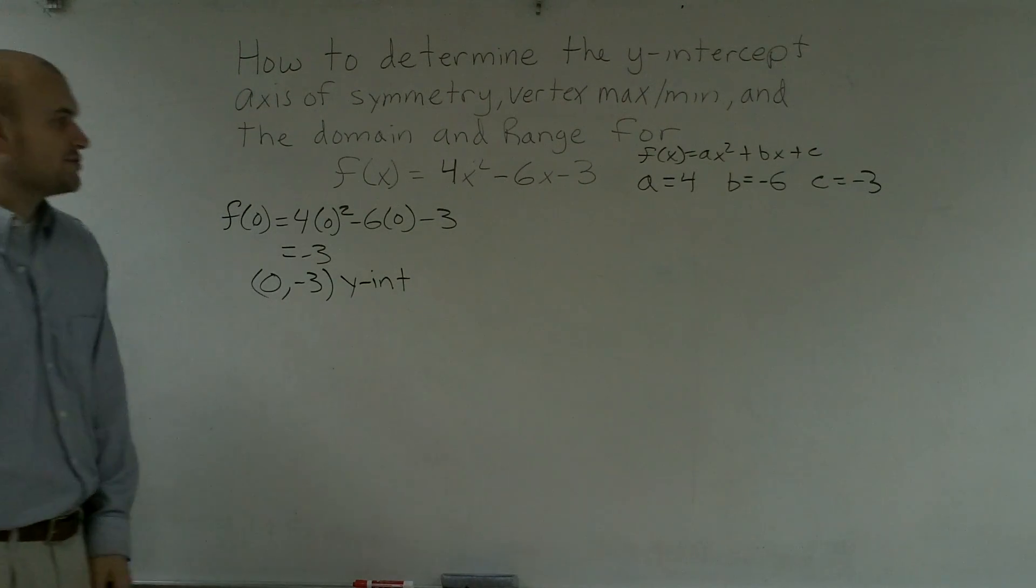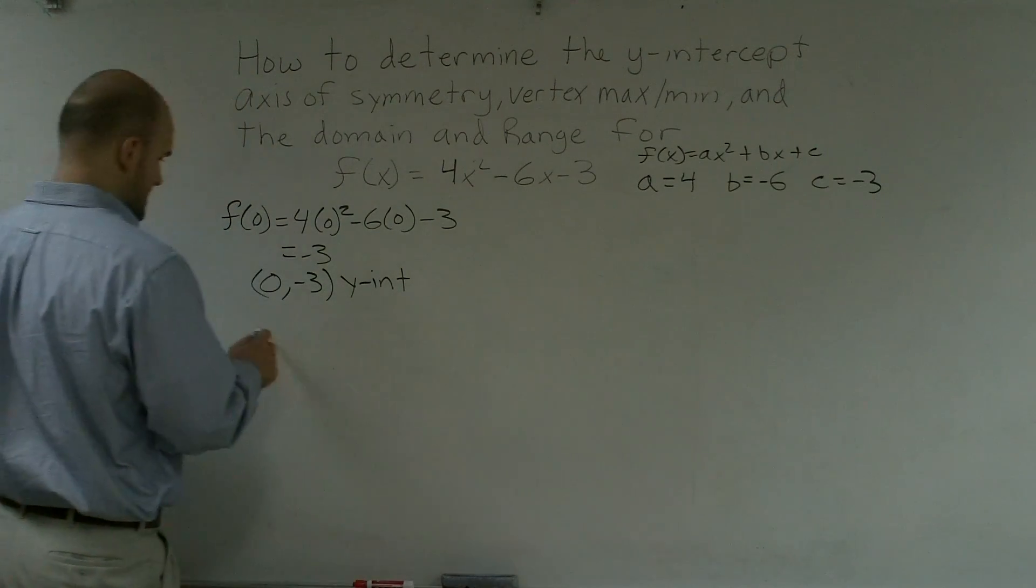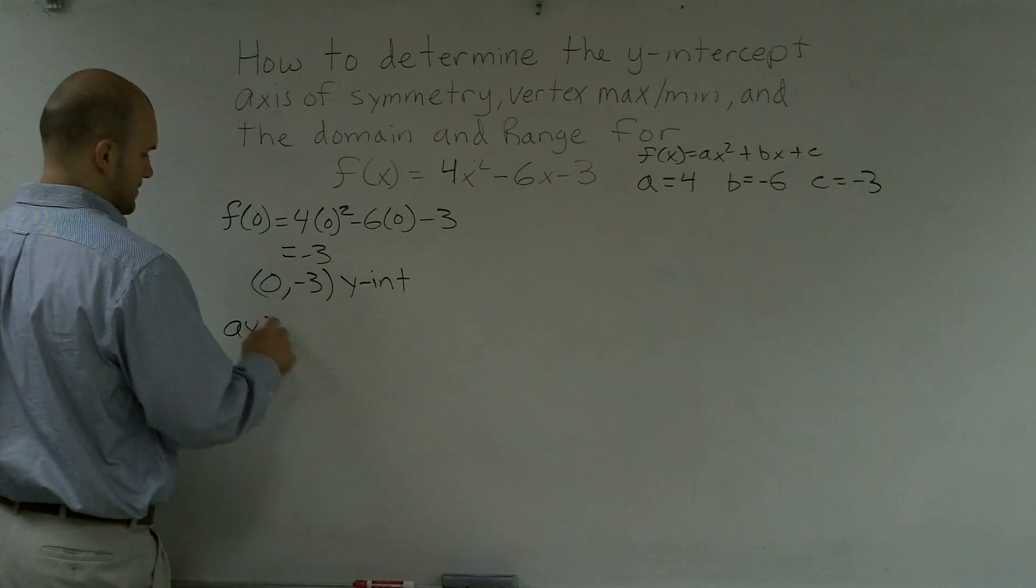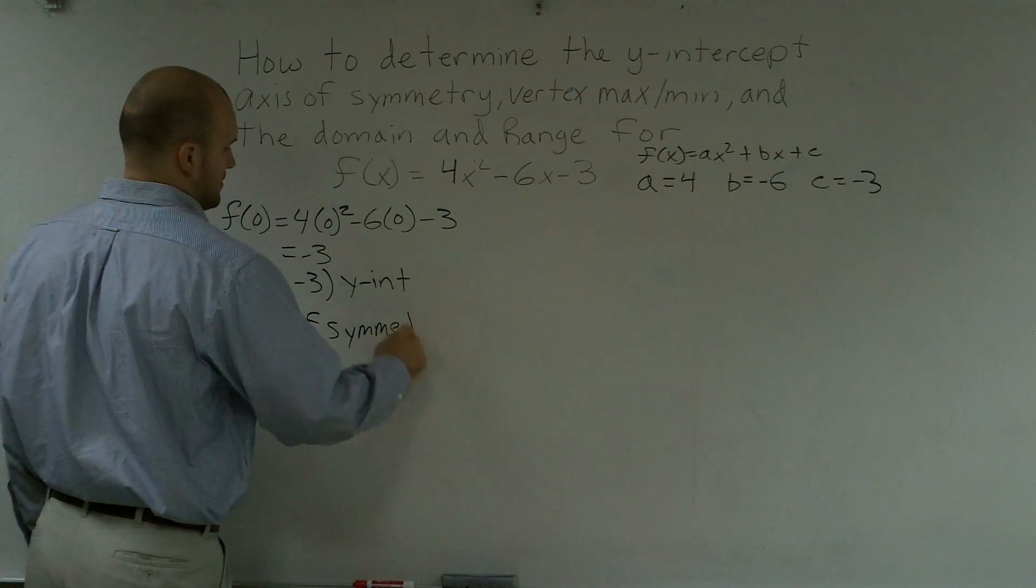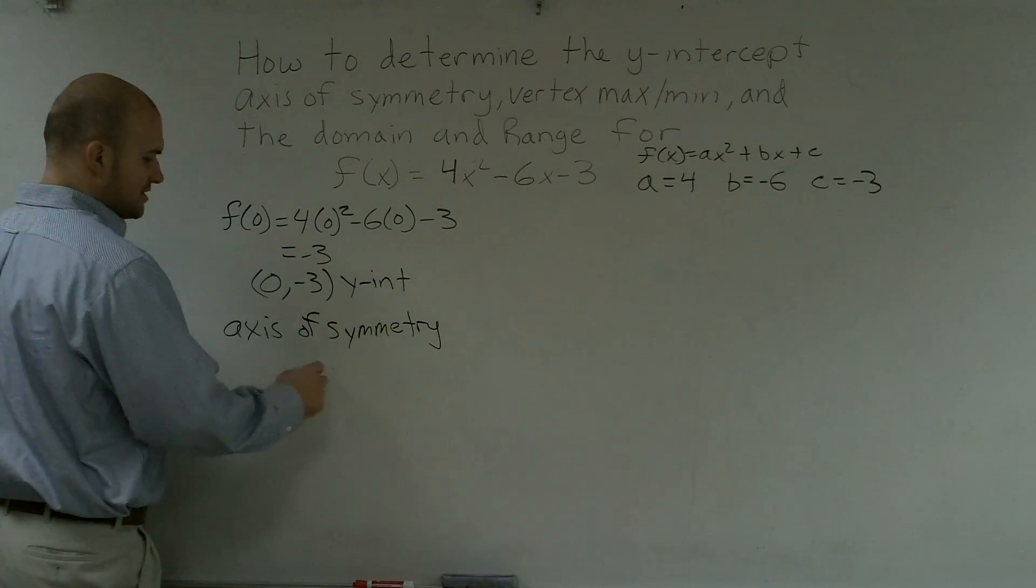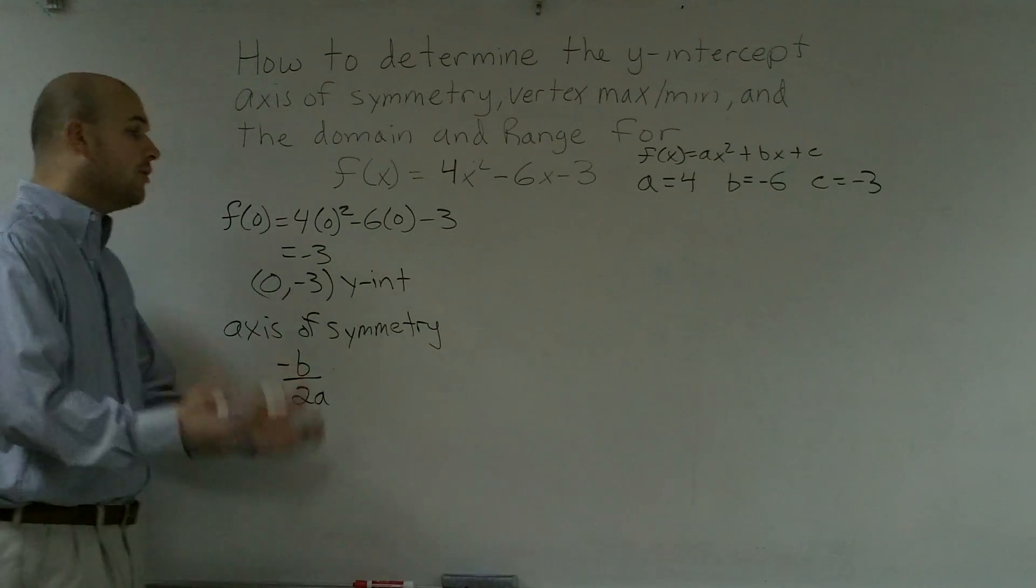Next thing, axis of symmetry. Axis of symmetry is you do have to know a little formula, which the axis of symmetry goes in the form of -b over 2a.